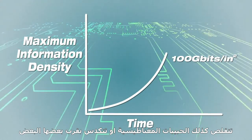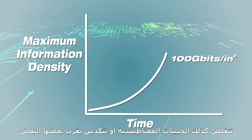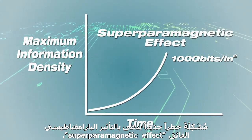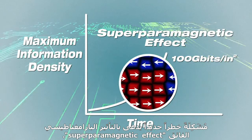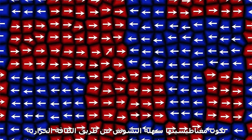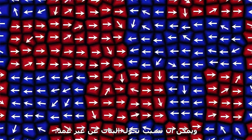But at around 100 gigabits per square inch, shrinking the magnetic grains further or cramming them closer together posed a new risk, called the superparamagnetic effect. When a magnetic grain volume is too small, its magnetization is easily disturbed by heat energy, and can cause bits to switch unintentionally, leading to data loss.